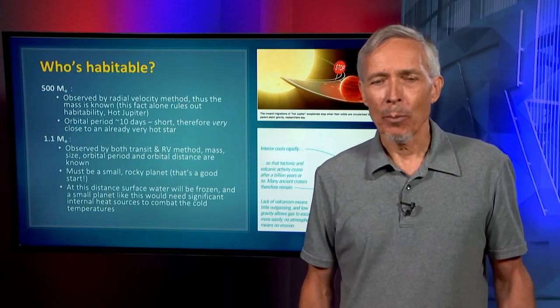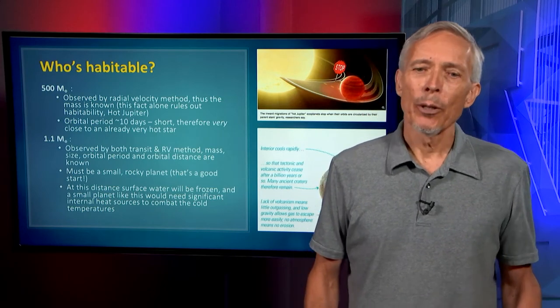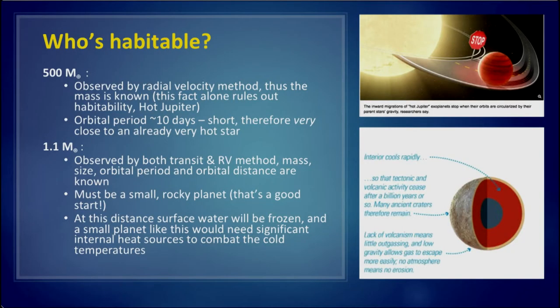Sometimes it's simple. For the super-Jupiter, observed by the radial velocity method, and so the mass is known, this is enough to rule out habitability. Because when planets are orbiting that close to the star, and the Doppler method gives the orbital period, as does the eclipse method, and we know the parent star's luminosity and temperature...